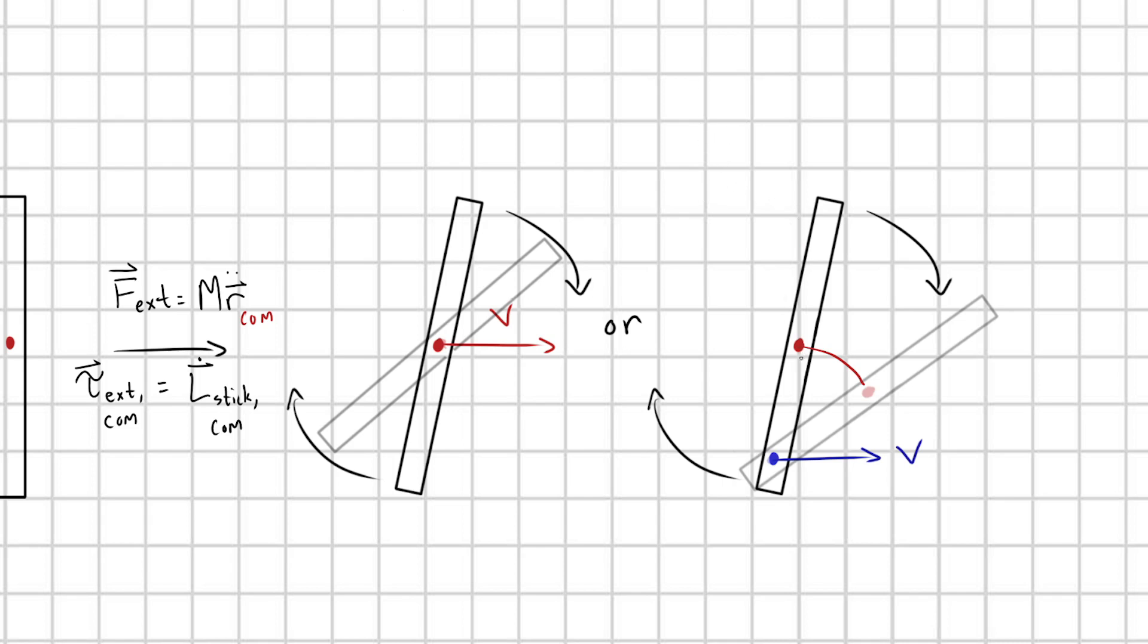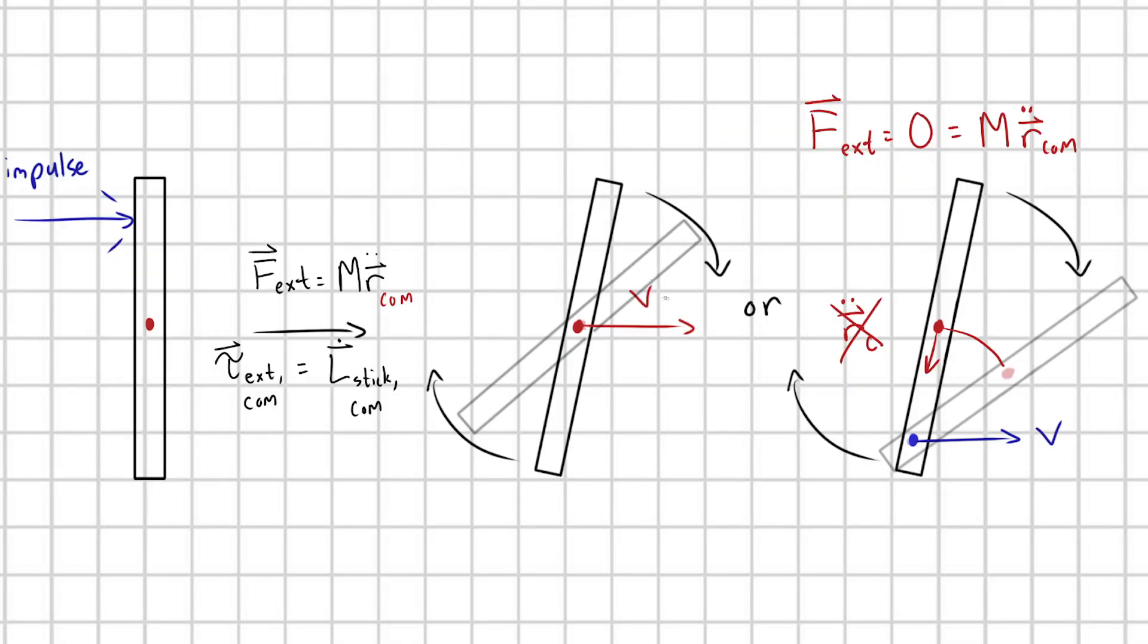But this implies that the point at the center of mass has some centripetal acceleration. However, we know that the net external force acting on my stick at this point is equal to zero. We just poked the stick and now it's flying through space. There's no external forces acting on the stick. Here's our rule: this equals m times r double dot of our center of mass. So the acceleration on our center of mass must be equal to zero. We cannot have this centripetal acceleration pulling our center of mass inward.